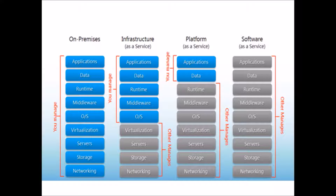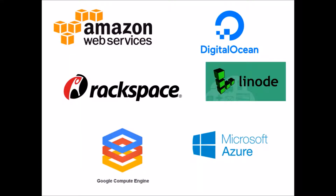The next one is Infrastructure as a Service. Here you manage only the application, data, runtime, middleware, and operating system — the rest of the stack is managed by someone else. Examples include Amazon Web Services, Rackspace, Google Compute Engine, Microsoft Azure, DigitalOcean, and Linode.